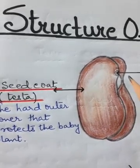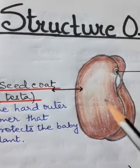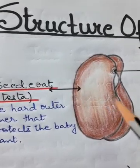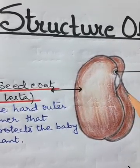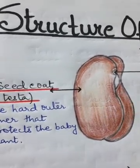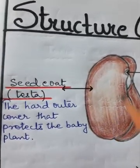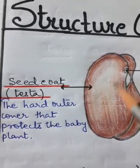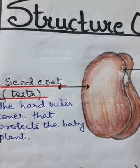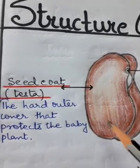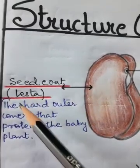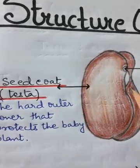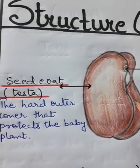For example, almonds are seeds protected by a hard seed coat. When we crack it open, the fleshy almond comes out. Similarly, walnuts have a hard seed coat that protects the fleshy walnut inside. So the seed coat plays a very important role in protecting the embryo.